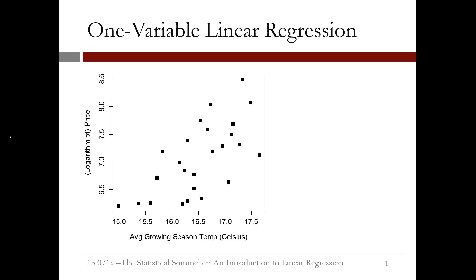The goal of linear regression is to create a predictive line through the data. There are many different lines that could be drawn to predict wine price using average growing season temperature. A simple option would be a flat line at the average price, in this case 7.07.